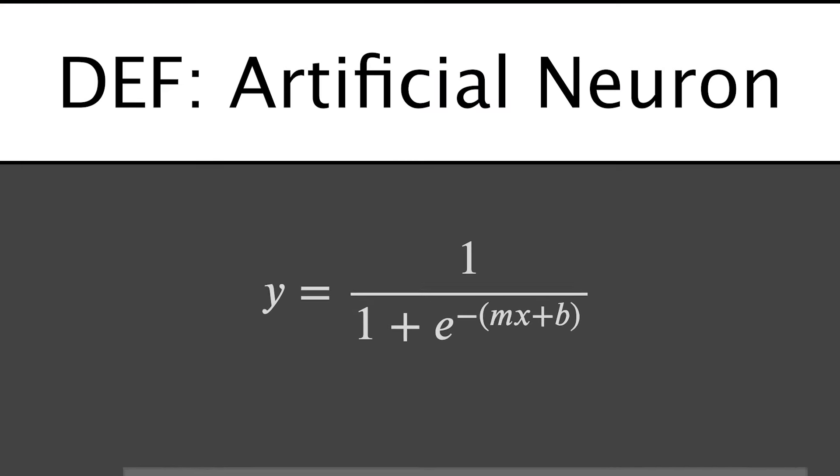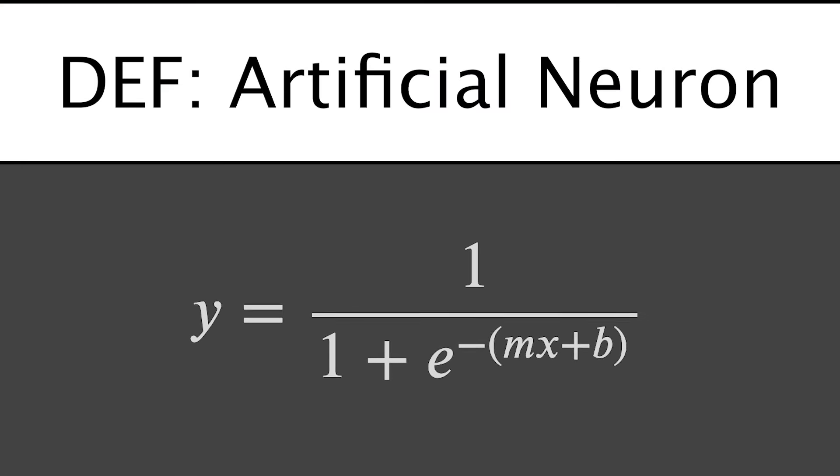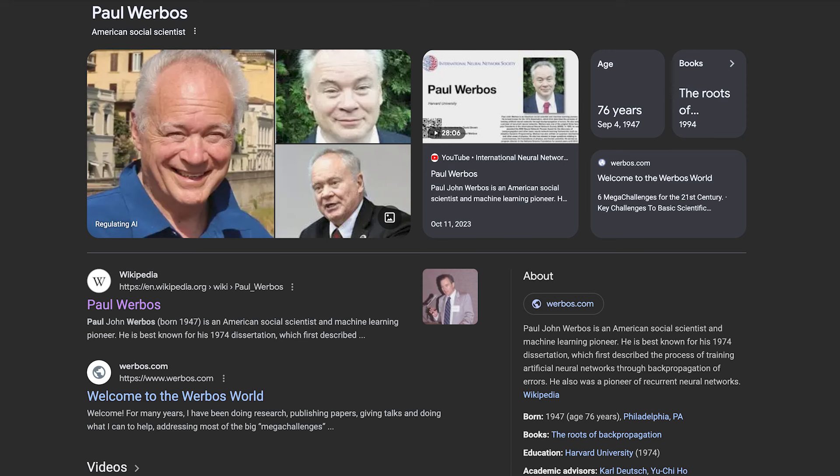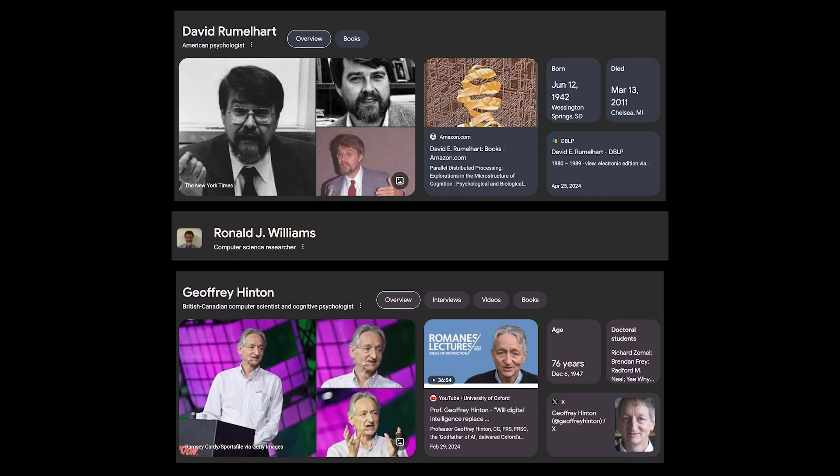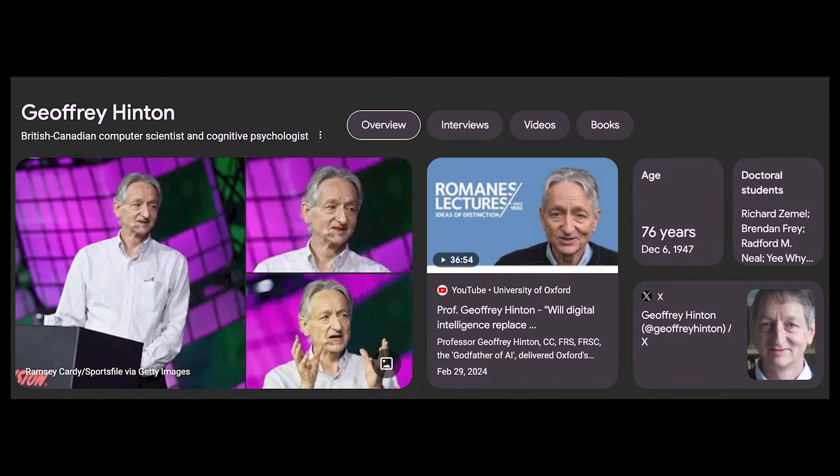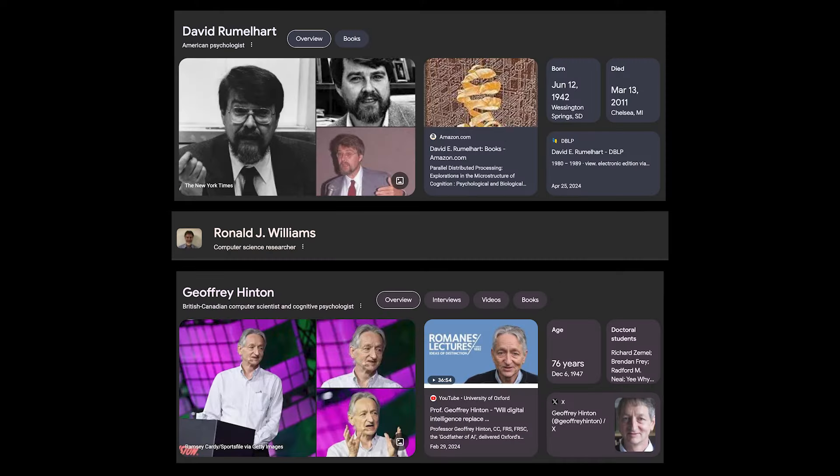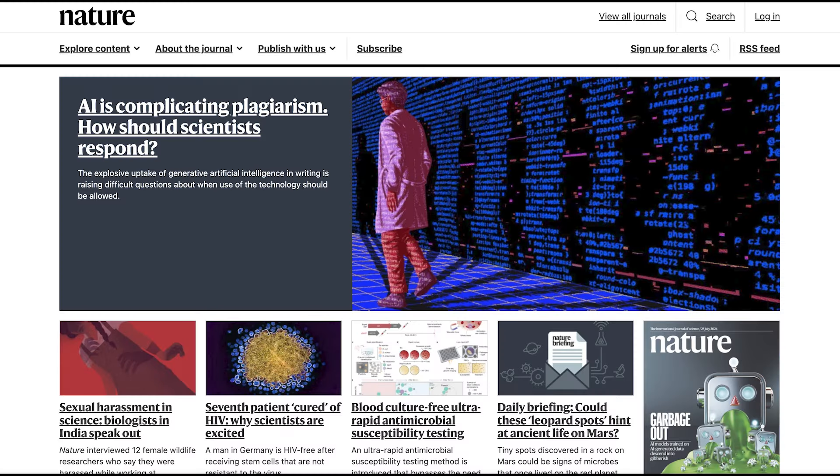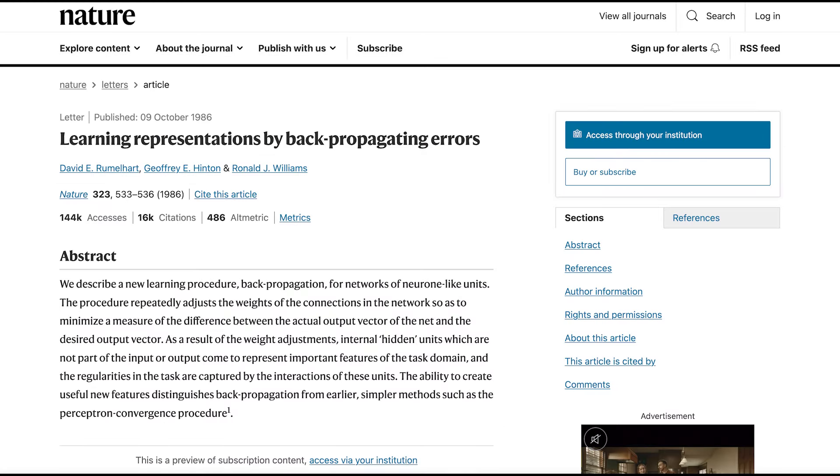Focus. This is what we'll use as the definition of our artificial neuron: 1 over 1 plus E to the negative MX plus B equals Y. The individual who made the connection of using these simple math equations to represent a neuron was, I believe, Paul Wuerbos in 1974. But the individuals who popularized this idea were David Rumelhart, Jeffrey Hinton, and Ronald Williams in their 1986 article published in Nature magazine called Learning Representations by Backpropagating Errors.